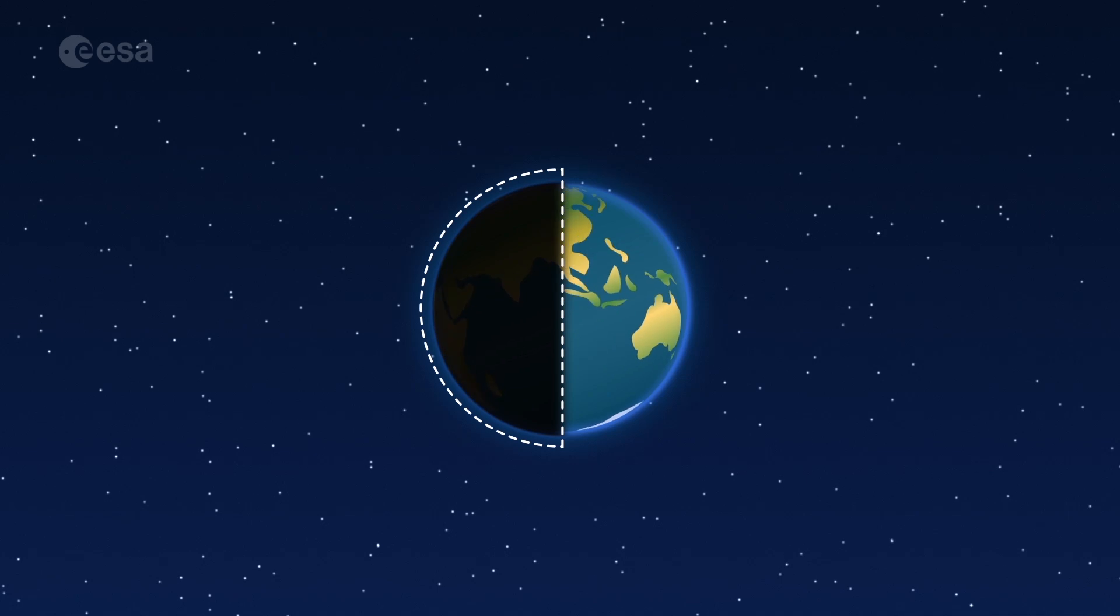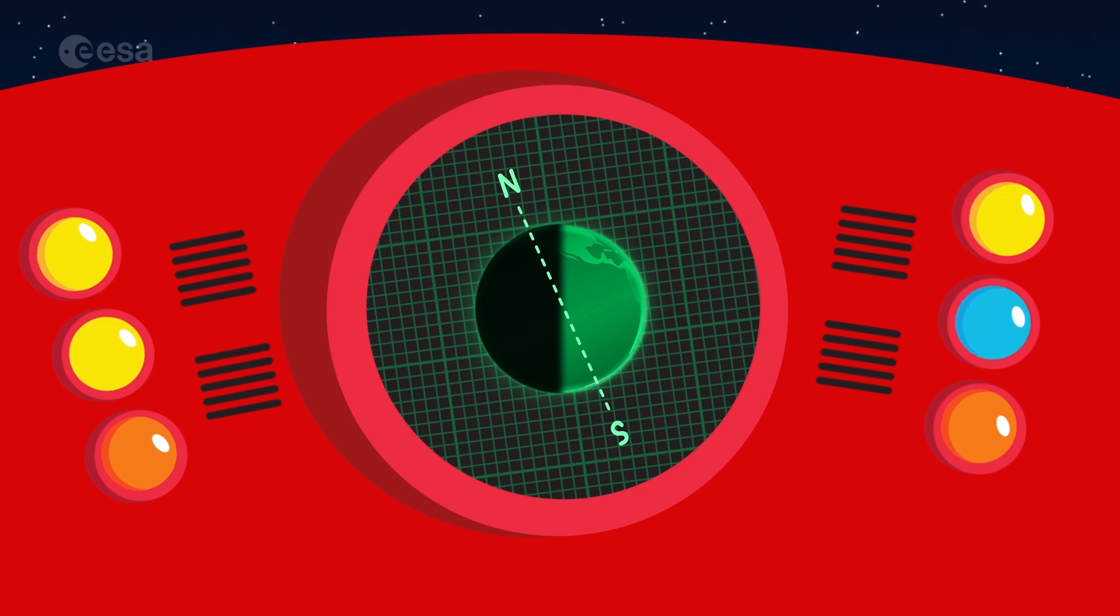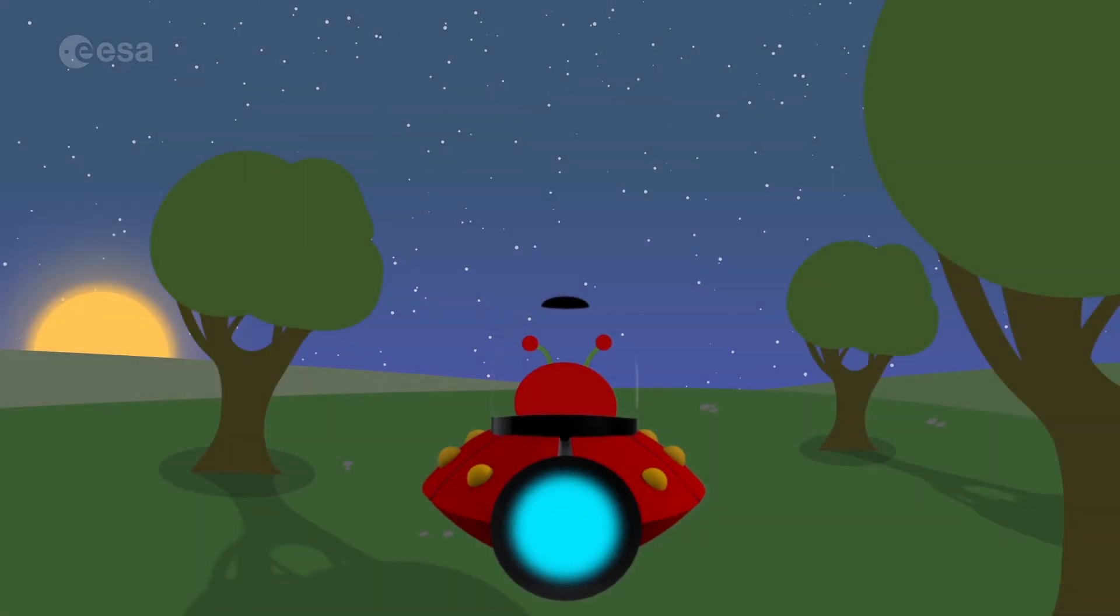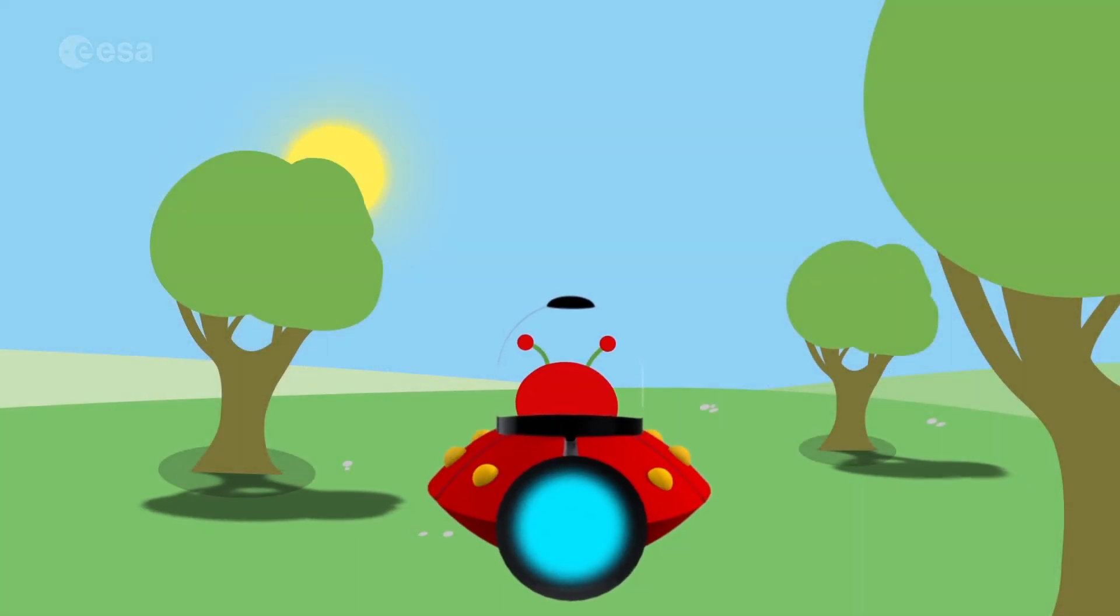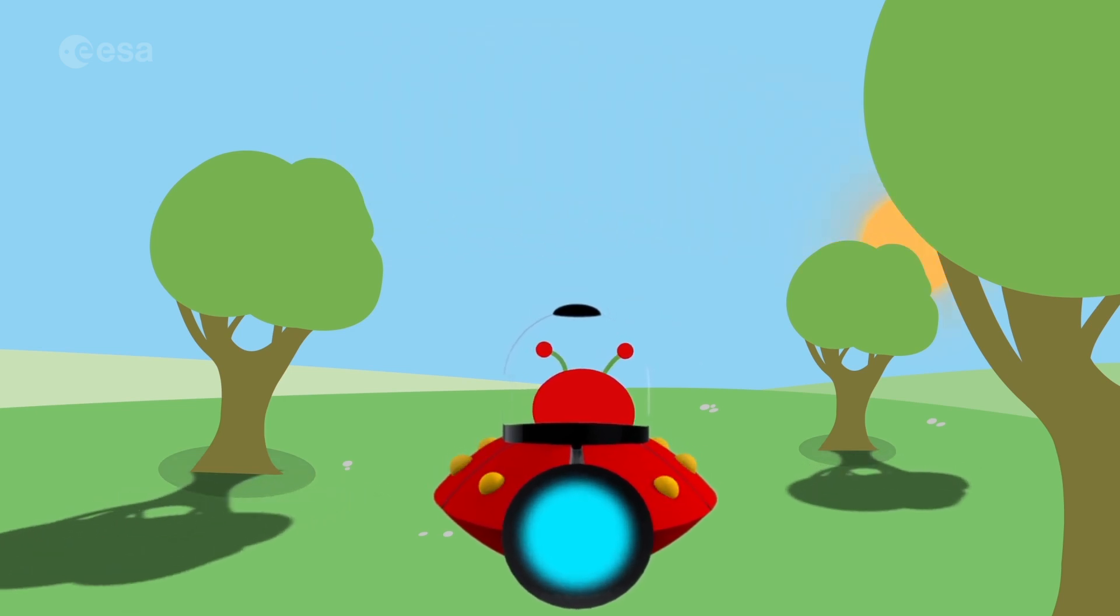The Earth spins on its axis, an imaginary tilted line that goes from the North Pole to the South Pole. From the ground, it looks like the sun and stars are moving. But in fact, it is the Earth that is spinning.